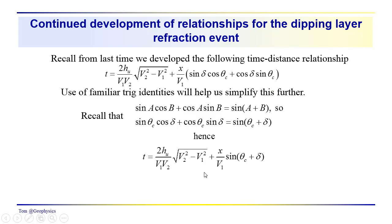So we can rewrite this expression for the time-distance relationship when the source is up-dip, we can rewrite that in this intercept-slope form. So once again, we have this straight line.